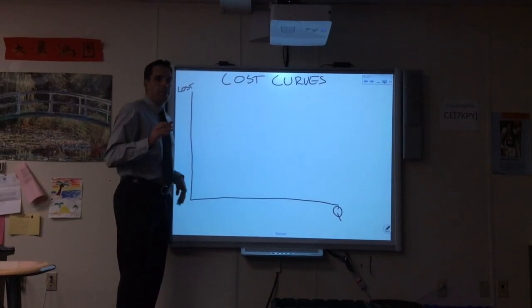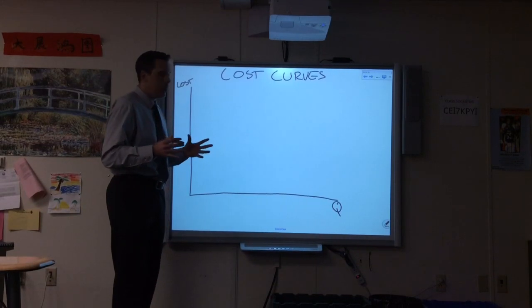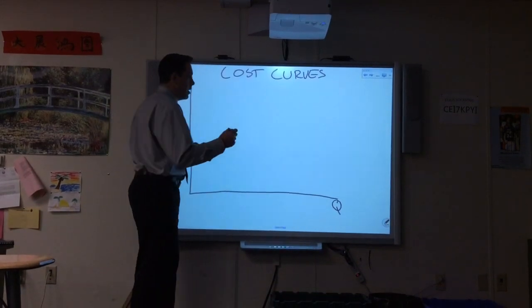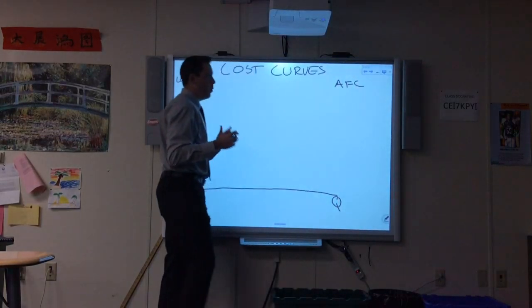I'm going to go over the four main cost curves of this unit. These are the four short-run cost curves. The first thing we'll do is average fixed cost, and we'll explain why it looks that way.